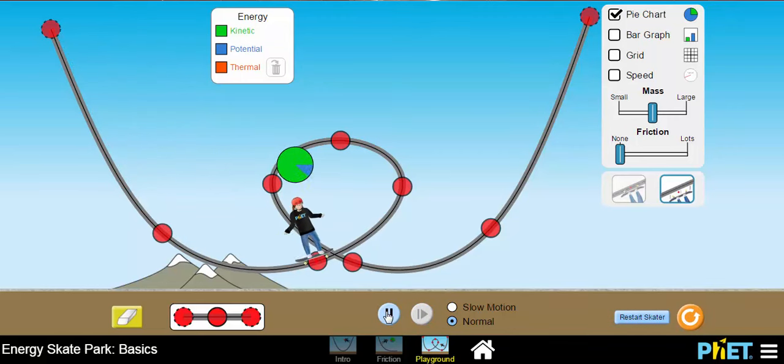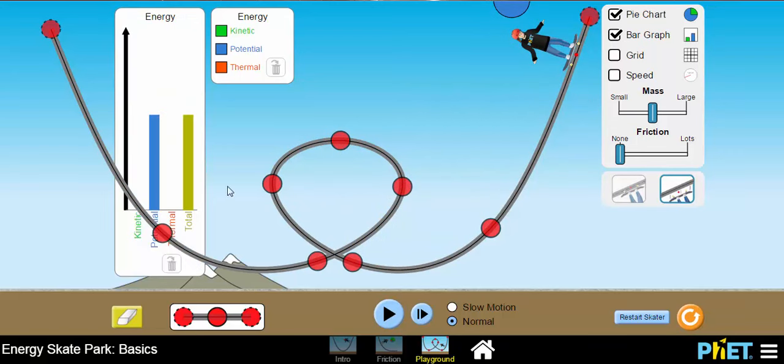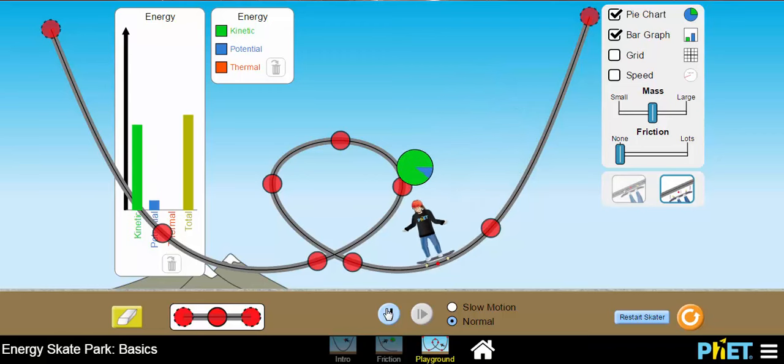In addition to that, we can add in a bar graph. A bar graph shows us, it's just another way to display the energy of the skater as the skater moves through the loop. You can see how that changes.